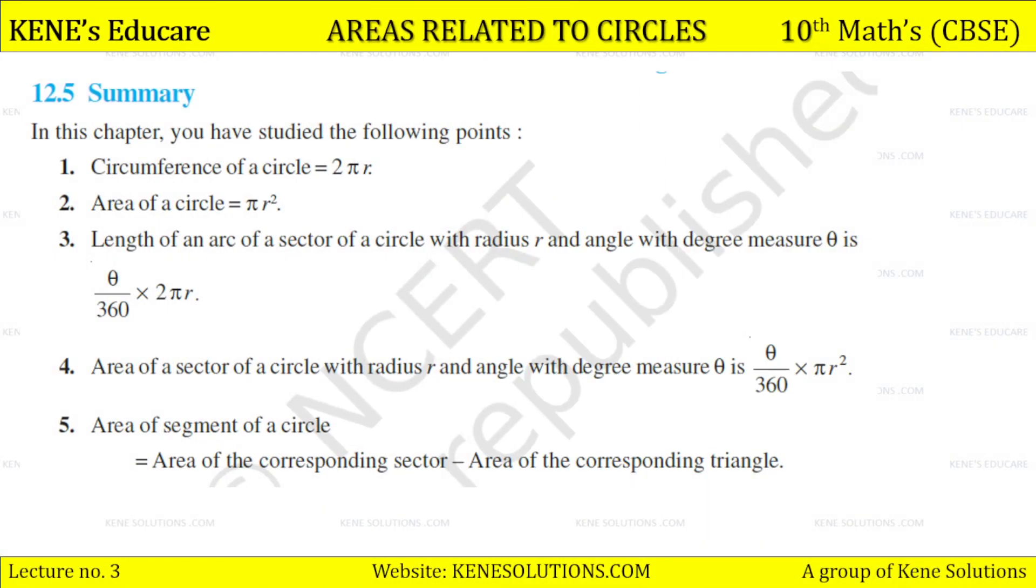So students, in this chapter you have studied the following points: Circumference of a circle = 2πr. Area of a circle = πr². Length of an arc of a sector of a circle with radius r and angle with degree measure θ is θ/360 × 2πr.